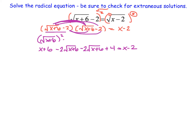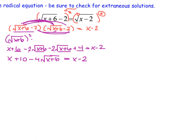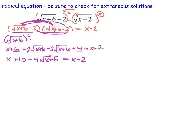After simplifying, I can combine like terms: x stays by itself, 6 and 4 combine to give plus 10, and the two square root terms combine to give minus 4 times the square root of x plus 6. That's all equal to x minus 2. This looks a little messy and like a lost cause, but it's actually going to be pretty simple to solve from here.